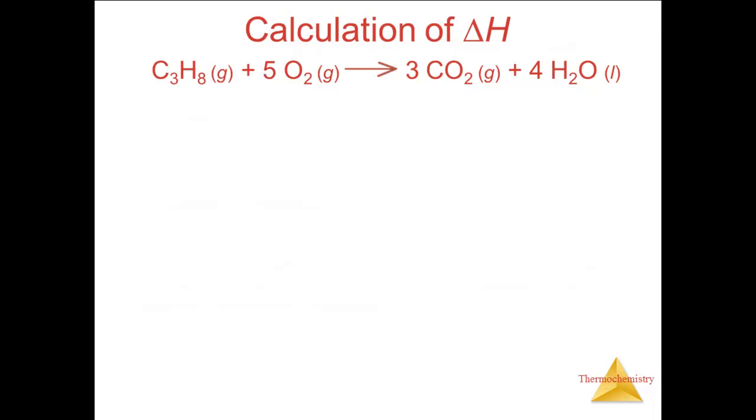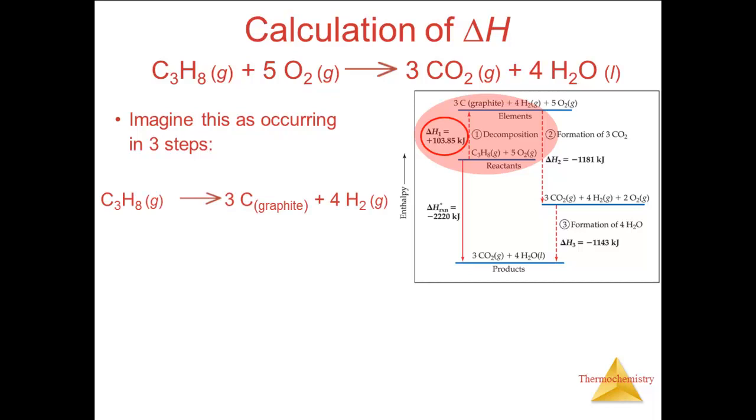Let's look at how we calculate the value of delta H for a reaction. The reaction shown is the combustion of propane. We will do three reactions to accomplish this, three steps. The first step is to decompose the propane into carbon solid and hydrogen gas. This requires an input of 103.85 kilojoules of energy. That is, delta H is plus 103.85 kilojoules. The O2 gas is already an element in its standard state.